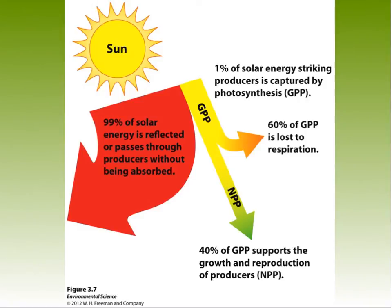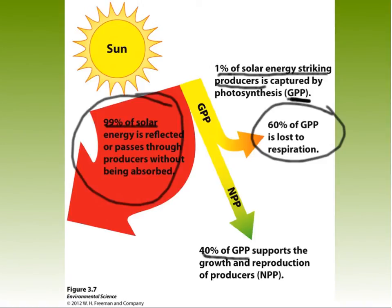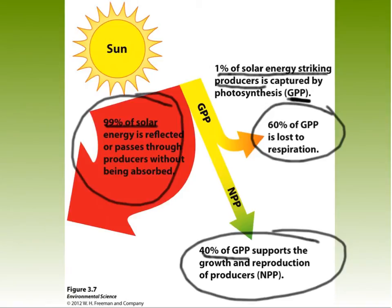If we look at this diagram in your book: 99% of solar energy is reflected or passes through because of the spectrum of light, so 99% is completely wasted. Only 1% of solar energy striking producers is captured by photosynthesis — that's GPP. Out of that GPP, approximately 60% is lost in cellular respiration for daily functions, and then 40% of that 1%, or 40% of GPP, supports the growth and reproduction of producers. That is NPP.